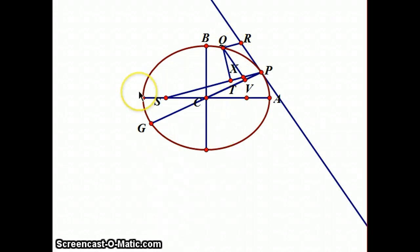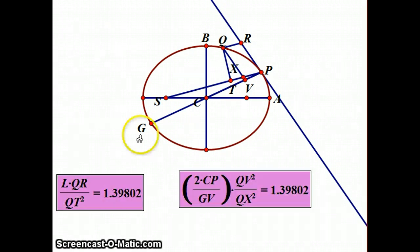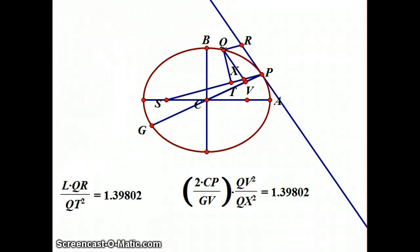What Newton is going to basically use geometry to prove is a very not obvious theorem, but the theorem is going to be this, that no matter where Q and P are on the ellipse, this relationship is going to end up being true. L is a constant associated with the ellipse. It's actually called the lattice rectum and it's the line segment that goes through the focus and is perpendicular to that major axis. So that's a constant with the ellipse. So L times QR over QT squared equals 1.4 approximately. And it's also true that this will always equal this other relationship, two times CP over GV times QV squared over QX squared. As you can see, no matter where I move Q, those two values still remain the same. But let me show you what the consequence of this theorem about ellipses is.